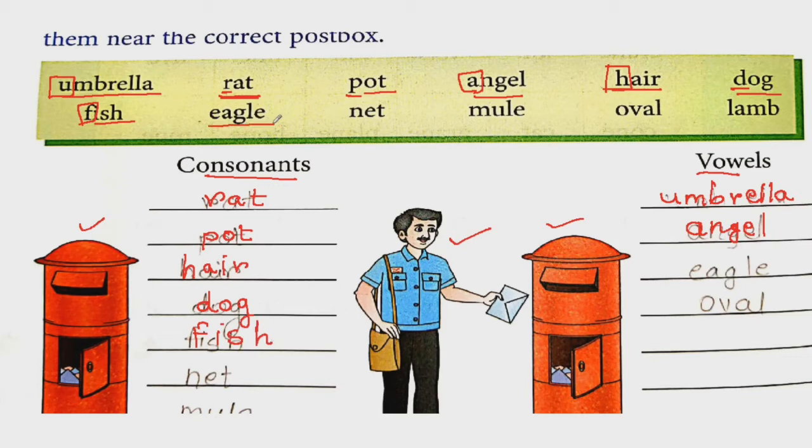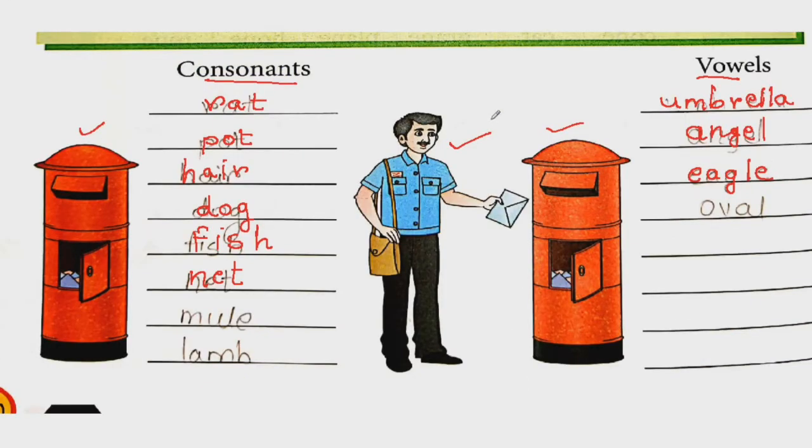Next word is eagle. Here first letter is E and E is a vowel. So E, A, G, L, E, eagle. Next word net. The first letter is N, so N is consonant. N, E, T, net. Mule, M, U, L, E. Here also first letter is M that is consonant. So write it in consonant post box.